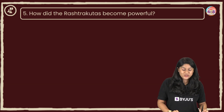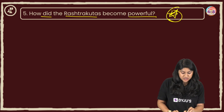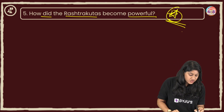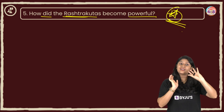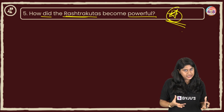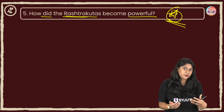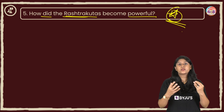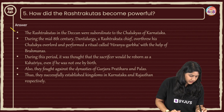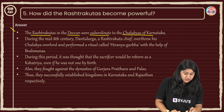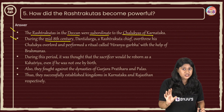Moving to the next question: how did the Rashtrakutas become powerful? This is a very important long question. The Rashtrakutas were not kings originally — they were not in a ruling position, but were subordinates of the Chalukyas. As they got power, they overthrew them. They performed a ritual called the Hiranyagarbha ceremony, and that's how they got power. The Rashtrakutas of the Deccan were subordinates of the Chalukyas of Karnataka. During the mid-8th century, Danti Durga was subordinate to the Chalukyas.